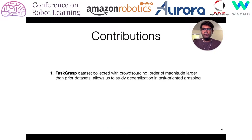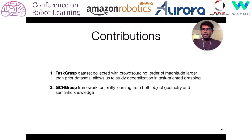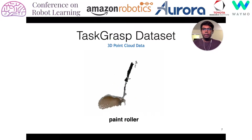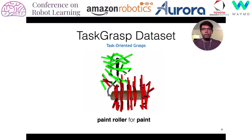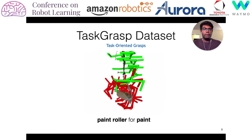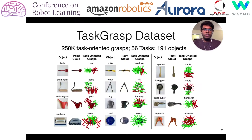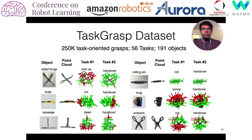For our contributions, we present the TaskRisk dataset, which is a pretty large dataset so we can study generalization. We also present the GCN-GRASP framework to jointly reason from both object geometry and semantic knowledge. We have 3D point cloud data in the dataset, and each object has task-oriented grasps that have been annotated. There are several different objects like knives, tongs, mugs, bowls, and each object has several different tasks you can perform like cutting, handing over, cleaning, scooping, and so on.